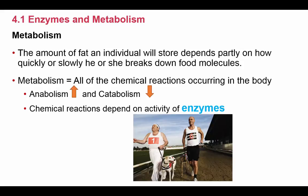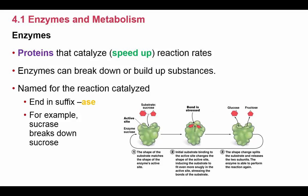Metabolism is actually a product of two processes: anabolism and catabolism. Anabolism is the process of building materials up, whereas catabolism is breaking things down. In order to understand body weight and these chemical reactions, we first need to discuss enzymes, because chemical reactions are very dependent upon the activity of enzymes. Let's talk first about enzyme structure on page 72 in your text.